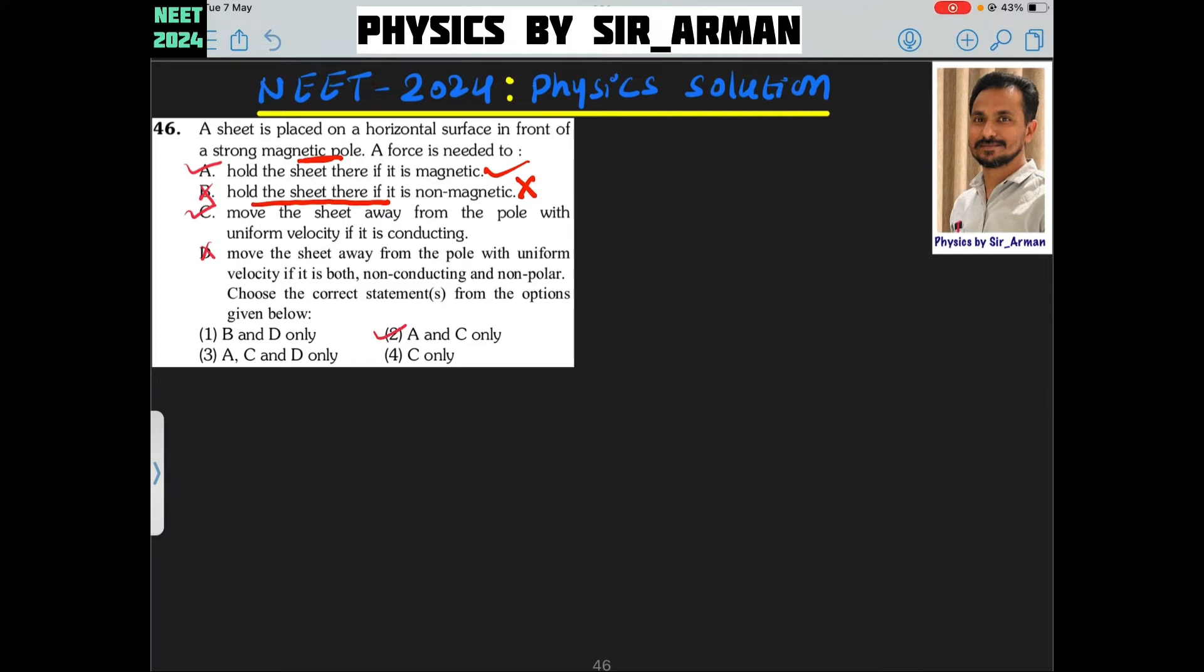Then C, move the sheet away from the pole with uniform velocity if it is conducting. Now suppose if there is a magnet, it is north. And if you try to move it away or towards, it is given away. So if you move it away, then what will happen? The magnetic flux will change.